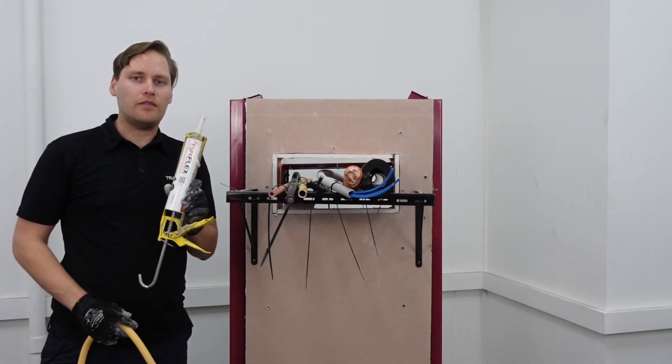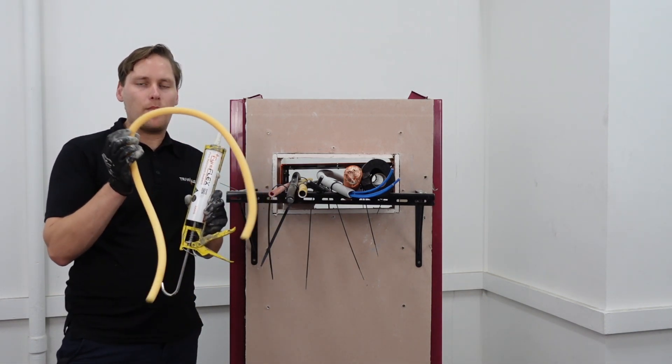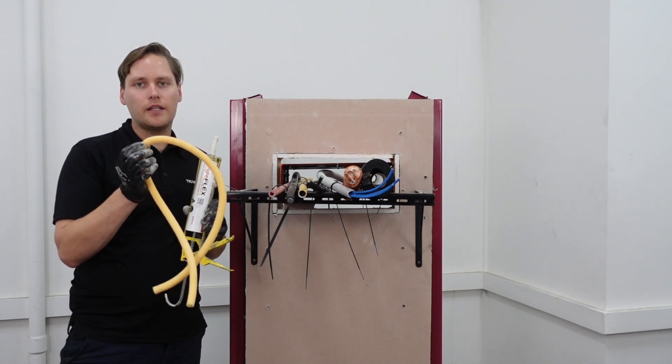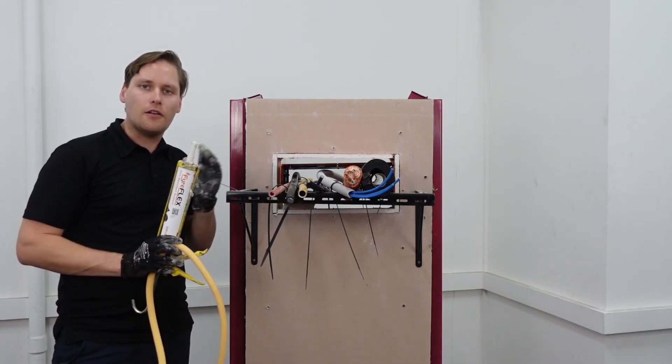Now we're ready to seal the gaps with Fireflex sealant. The best way to install Fireflex is to use something like a backing rod. This is optional but it does really help control the wastage and make sure you get the perfect amount of sealant in and around the Superstopper.